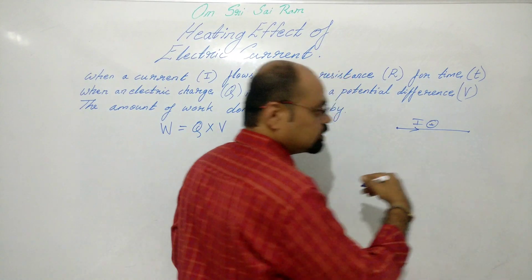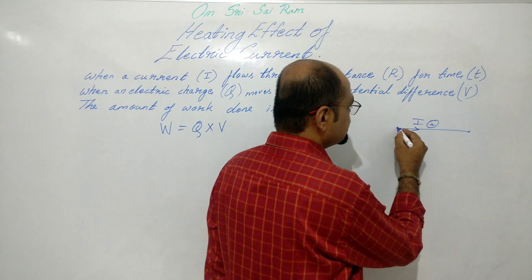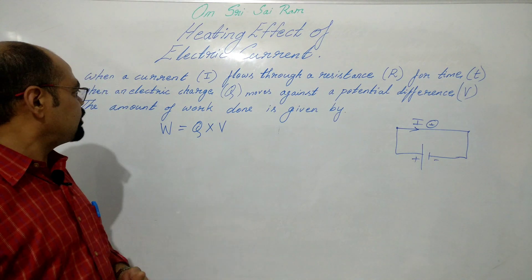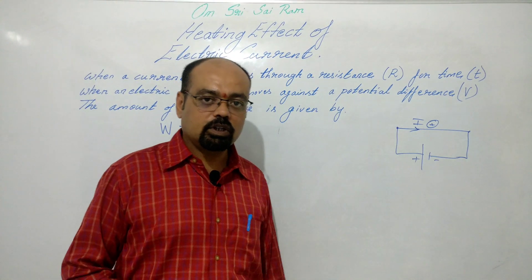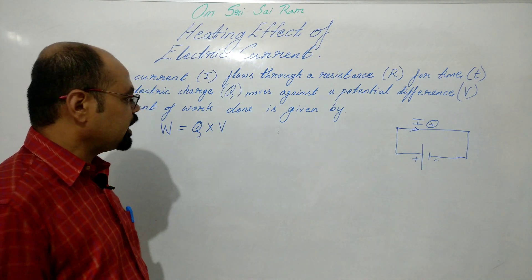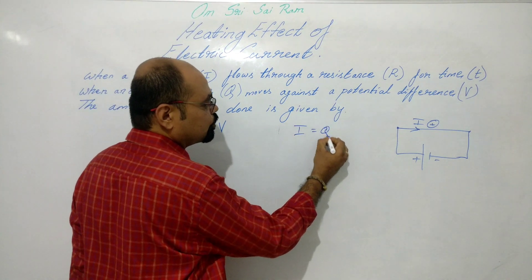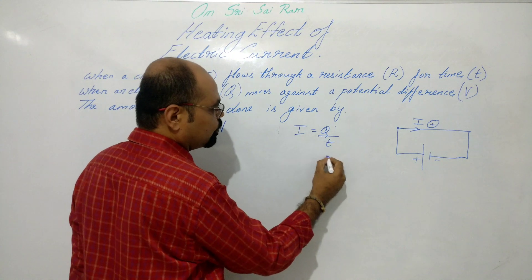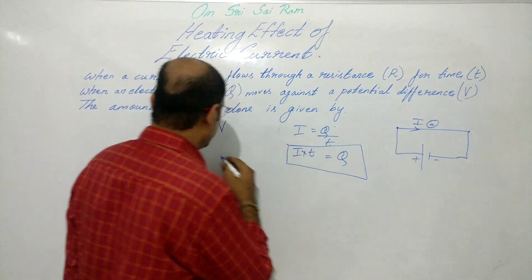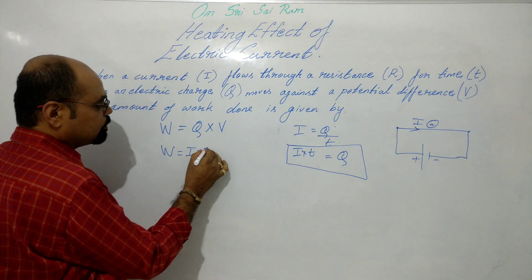Rate of flow of charge is electric current. Current is nothing but the rate of flow of charge. So Q is the charge that moves against a potential difference. The amount of work done in this circuit is given by: work done equals charge multiplied by potential difference. We have already studied that I = Q/T, so Q = I × T.